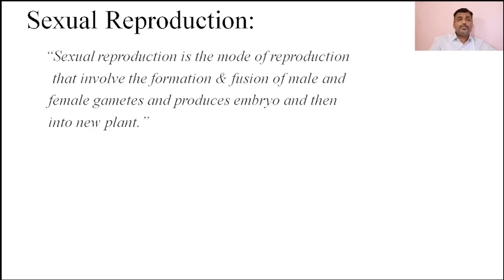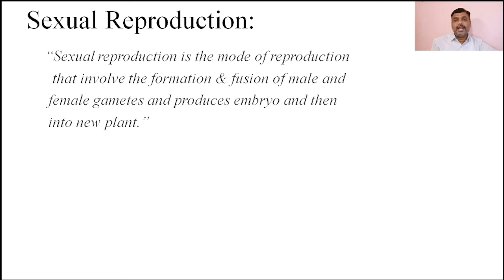The second type of reproduction carried out in all different types of living organisms is sexual reproduction. Sexual reproduction is a type of reproduction which involves formation and fusion of male and female gametes to produce an embryo and then a new plant. In sexual reproduction, two different types of gametes — male and female — are formed and fused with each other. Due to the fusion, a zygote is formed. From the zygote, the embryo is developed, and from the embryo, the new plant is developed.